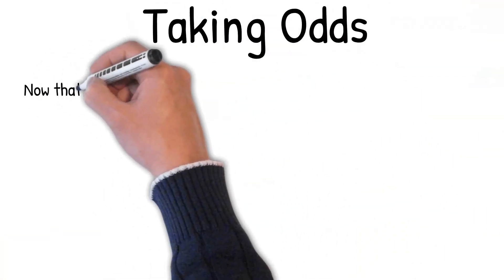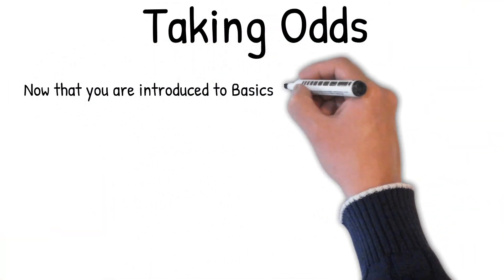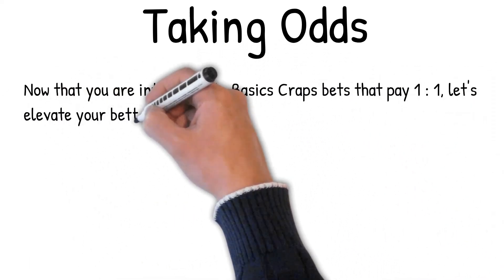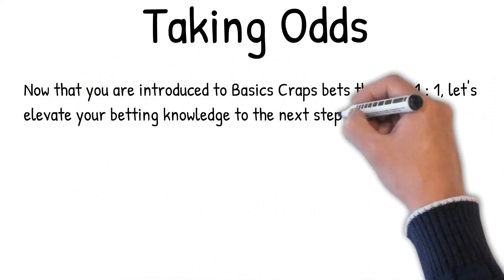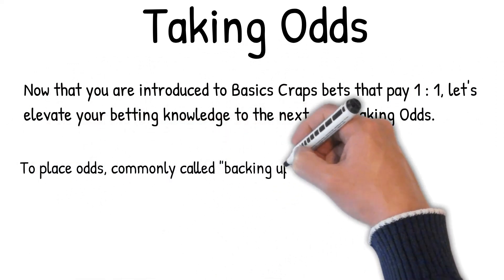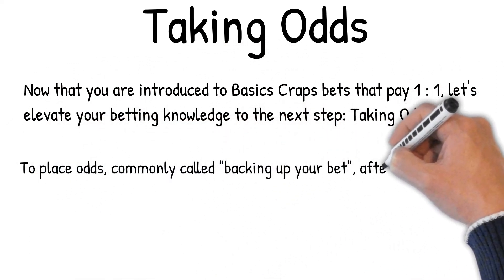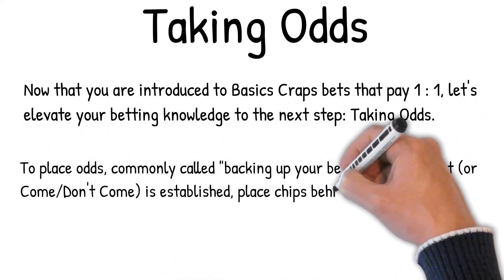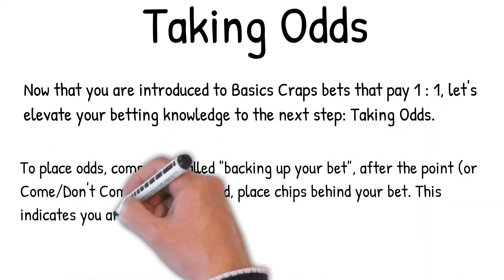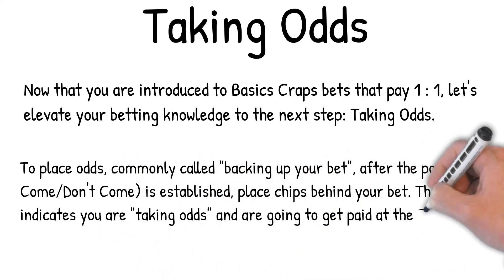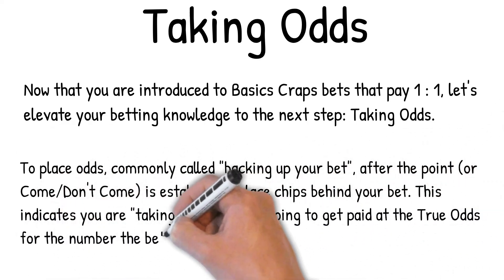Taking odds. Now that you're introduced to basic craps bets that pay one to one, let's elevate your betting knowledge to the next step — taking odds. To place odds, commonly called backing up your bet after the point or come/don't come is established, place chips behind your bet. This indicates you are taking odds and are going to get paid at the true odds for the number the bet is covering.